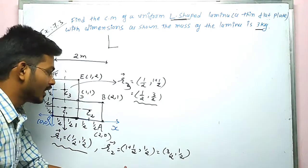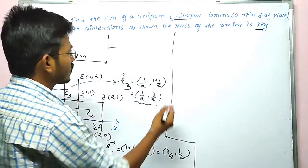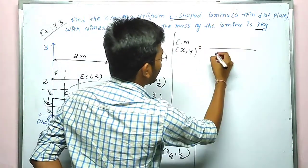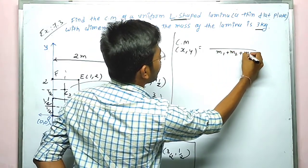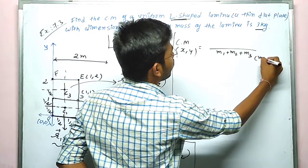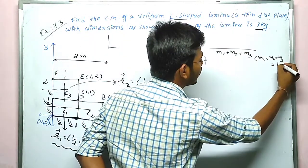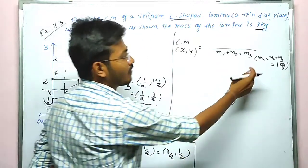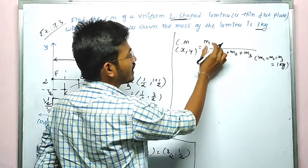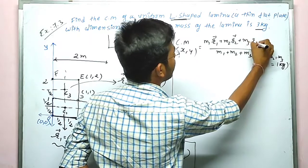Now we find the center of mass for the L-shaped configuration. Using the formula, the denominator is m1 + m2 + m3. Since the total mass is 3 kg and each part is equal, m1 = m2 = m3 = 1 kg. The numerator is m1·r1 + m2·r2 + m3·r3.